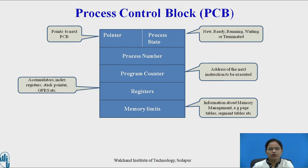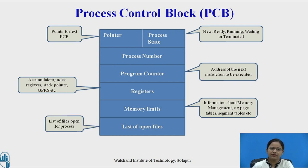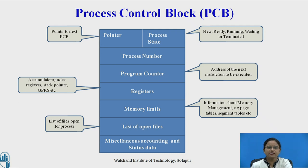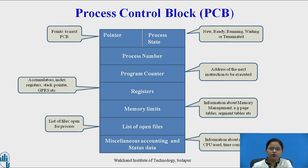Memory limits give information about memory management — for example, page tables and segment tables. The list of open files field records which files are opened by the process; for instance, if a program contains a file-open function, the process will maintain a count of open files. Finally, miscellaneous accounting and status data captures CPU usage and time constraints. The process control block is a dynamic structure because it changes as the process executes, which is why a process is called an active entity.